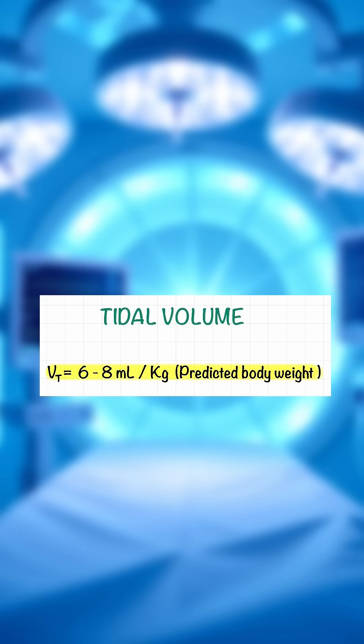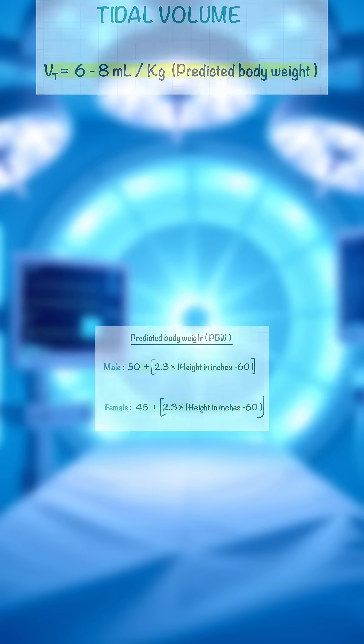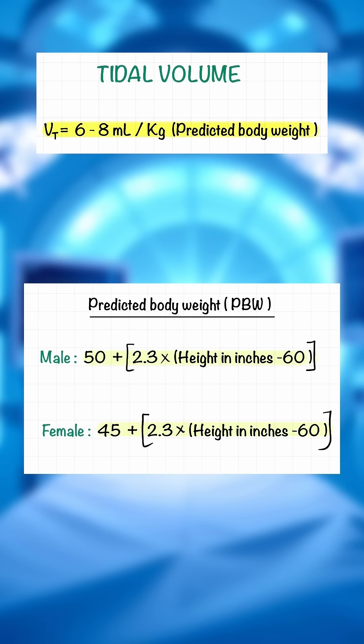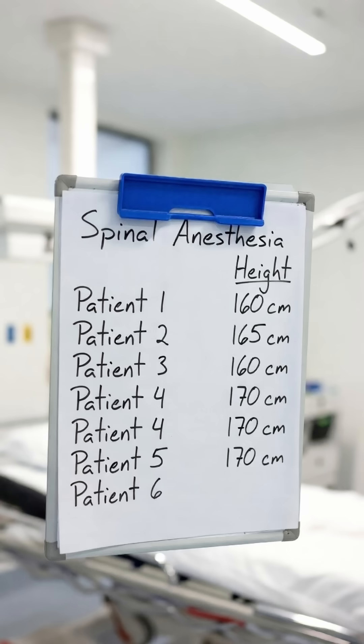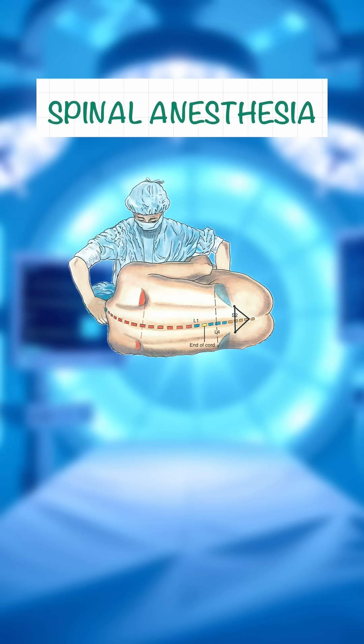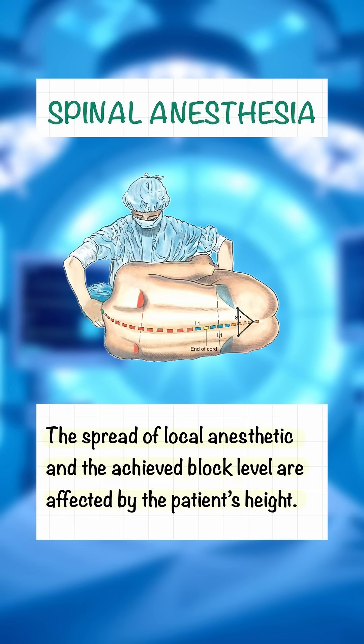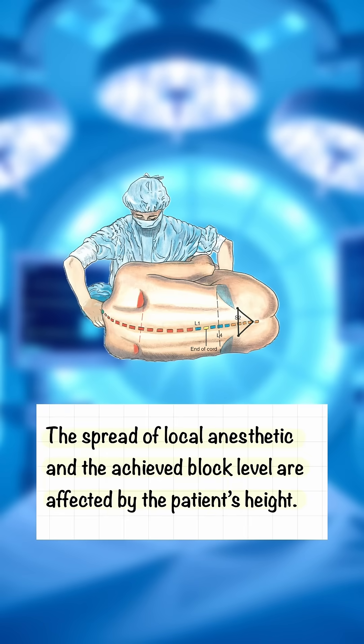During mechanical ventilation, the tidal volume we set is 6 to 8 ml per kg — that is predicted body weight. To find the predicted body weight, these are the equations. While giving spinal anesthesia, height of the patient is important.